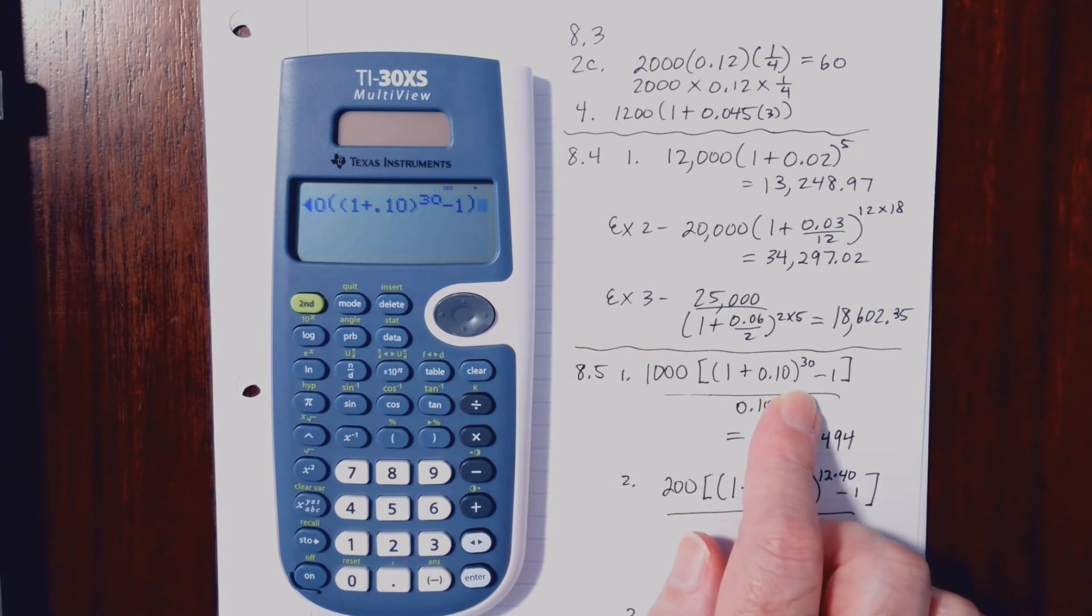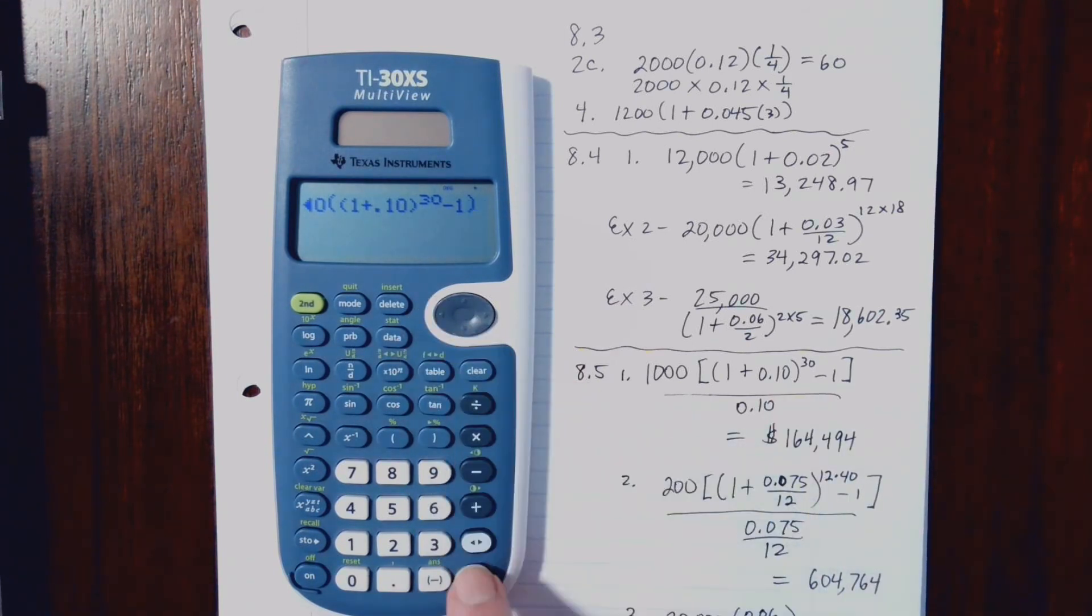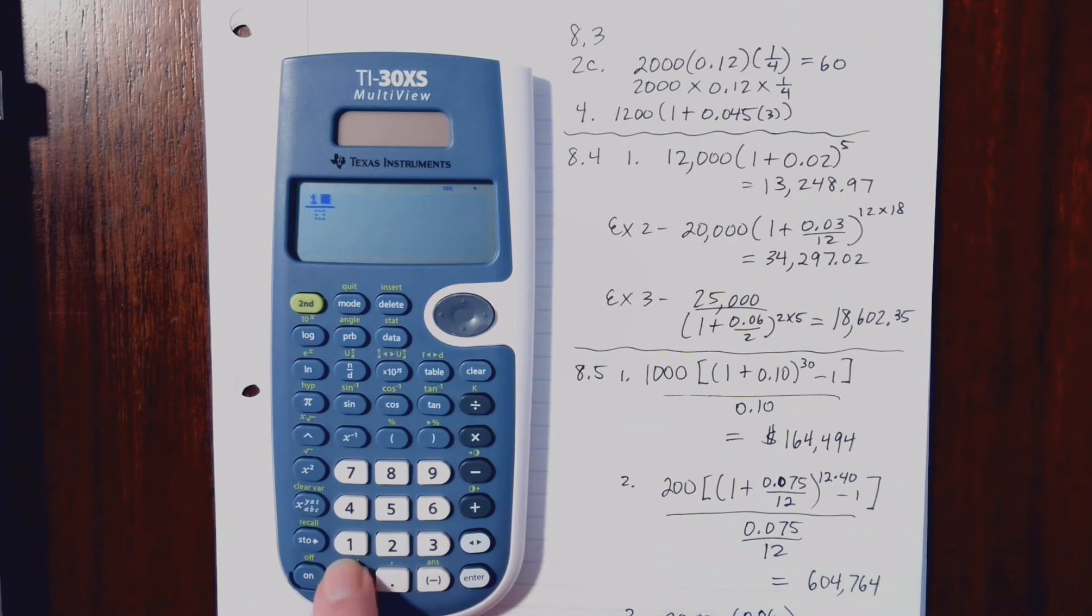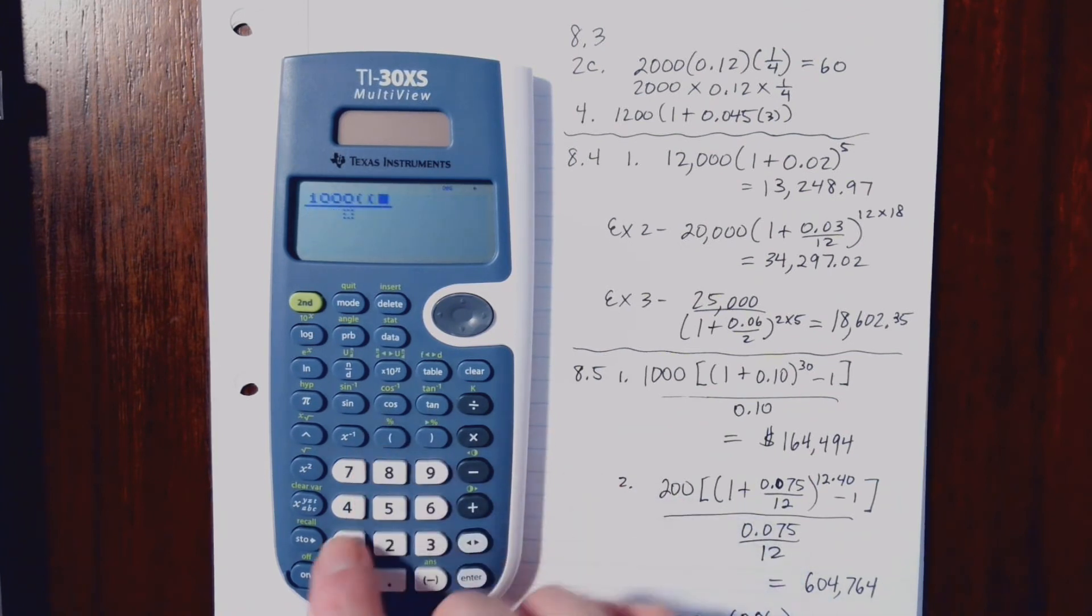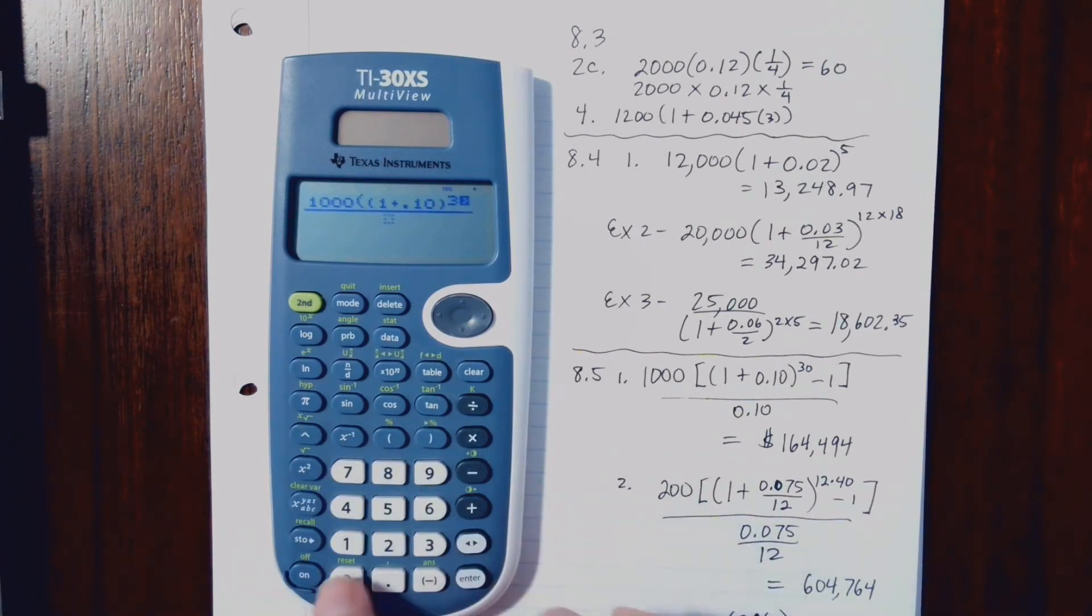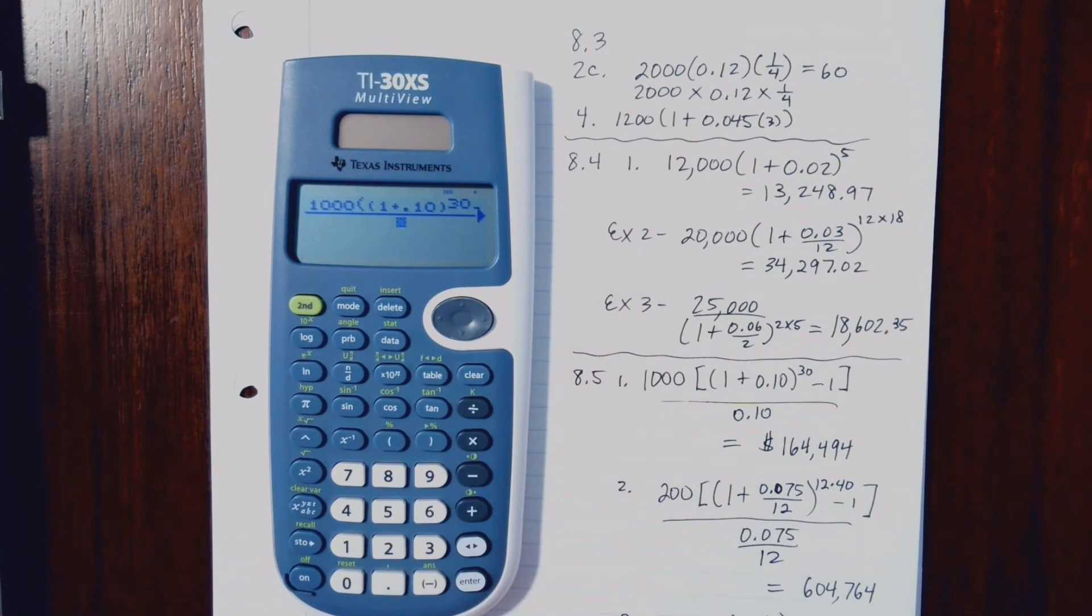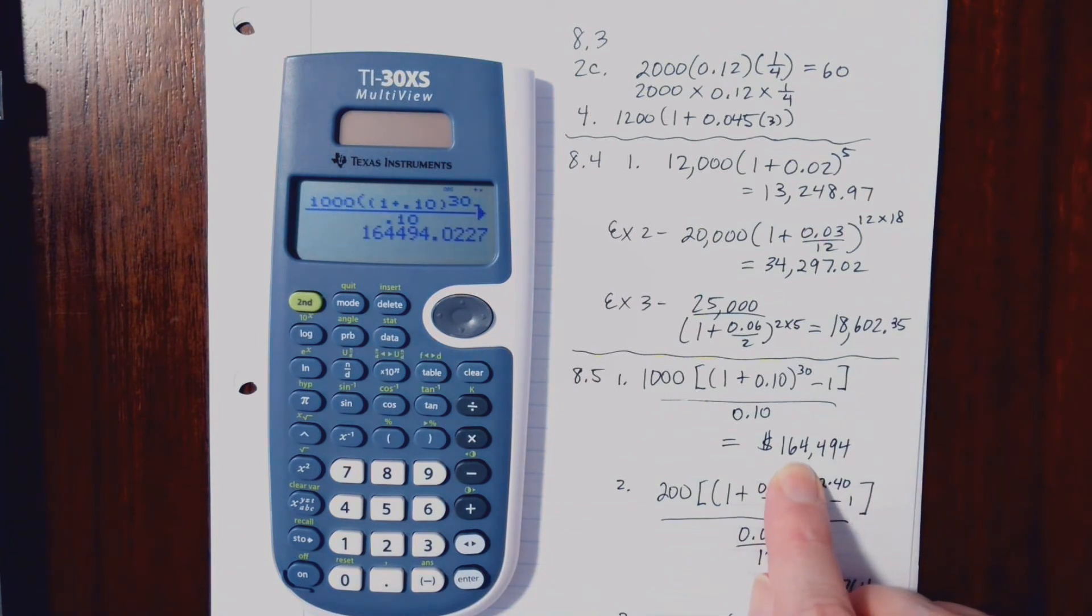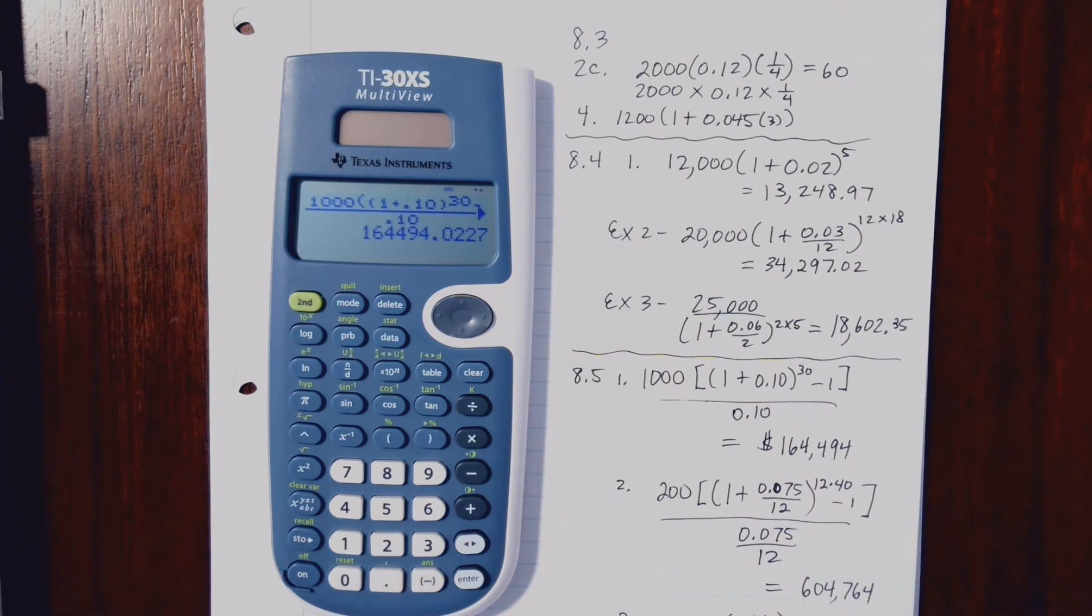Now, there's probably a way to make the numerator. Let's see if I can figure something out here. Maybe if I hit enter. No. Well, I've got to start all over. So I need to hit the fraction button first. 1,000, parenthesis, parenthesis, 1 plus .10, parenthesis, exponent 30, minus 1. And now you can see that's all in the numerator, although you can't see the whole thing right now. And then .10 in the denominator. And we do get $164,494. That's assuming we're rounding to the nearest dollar.